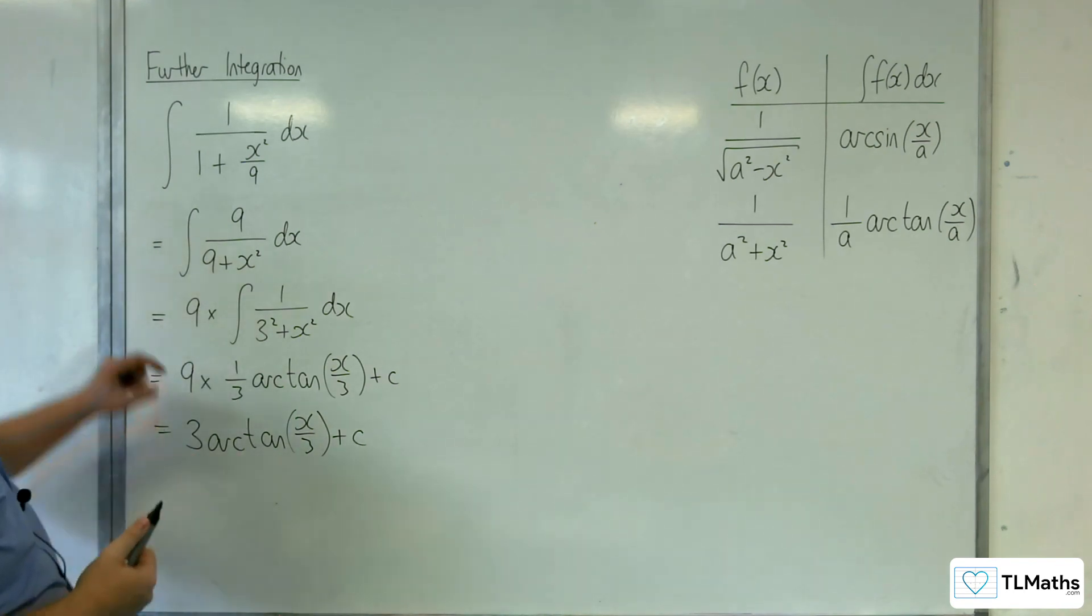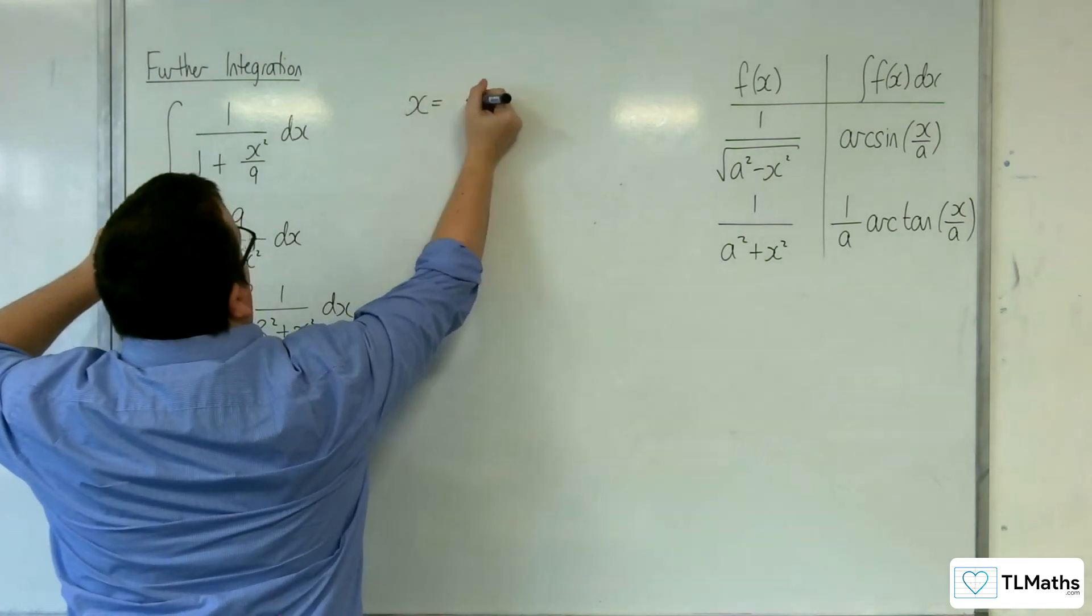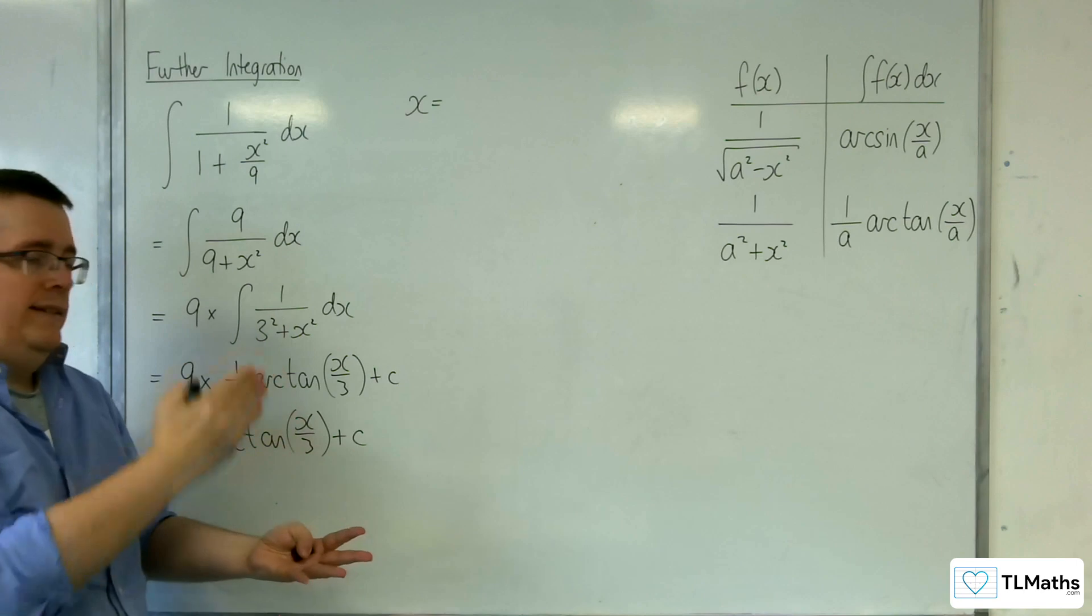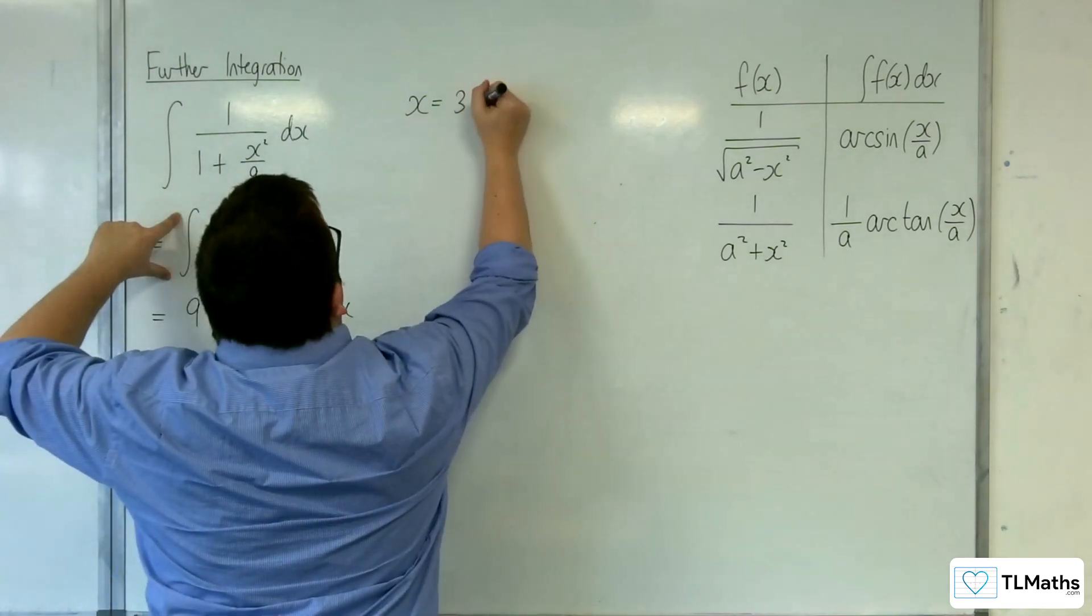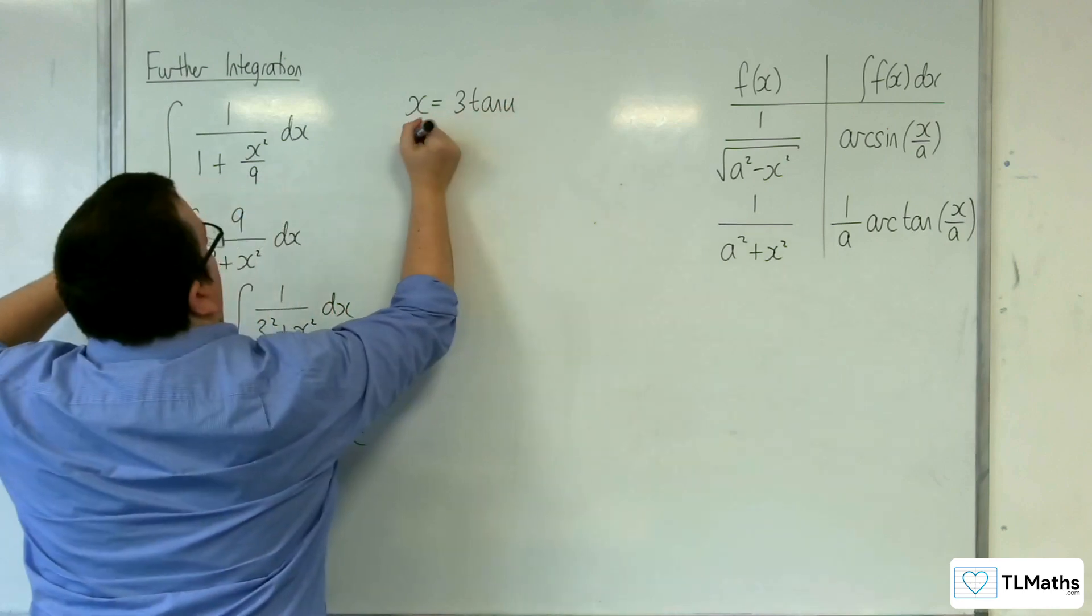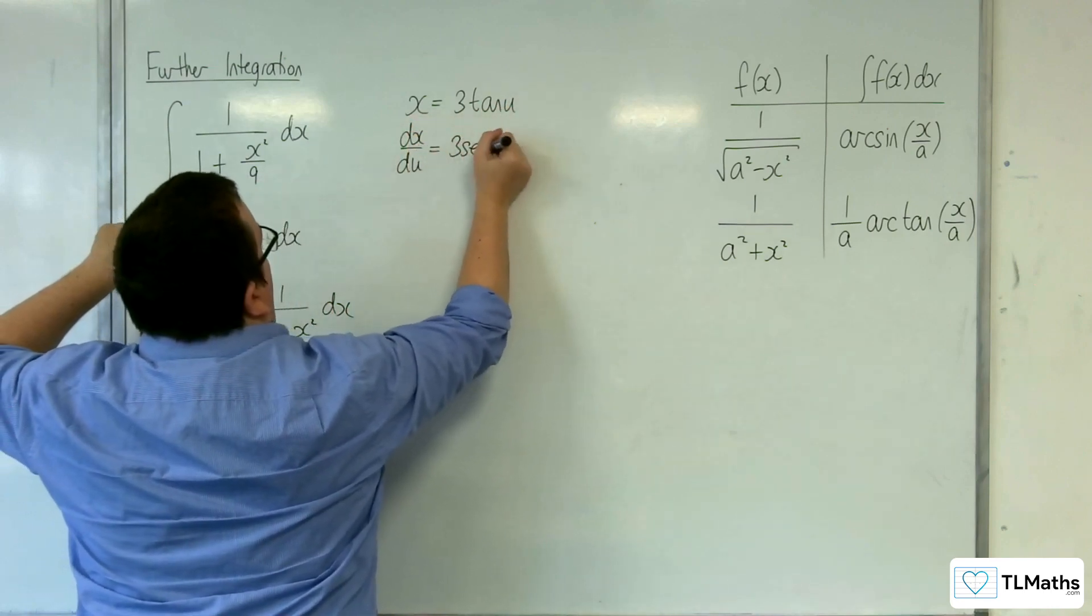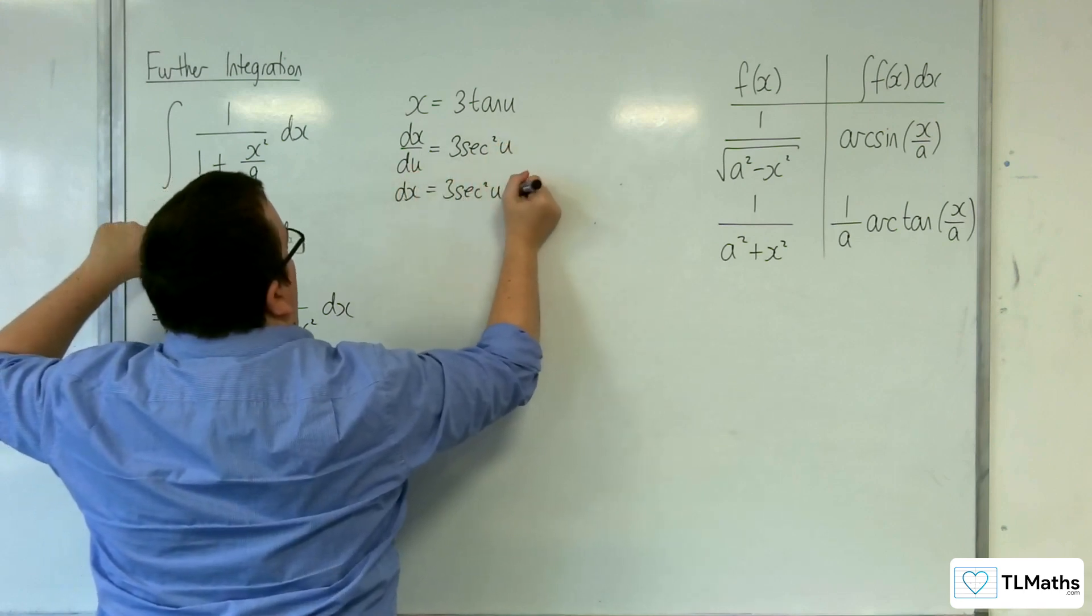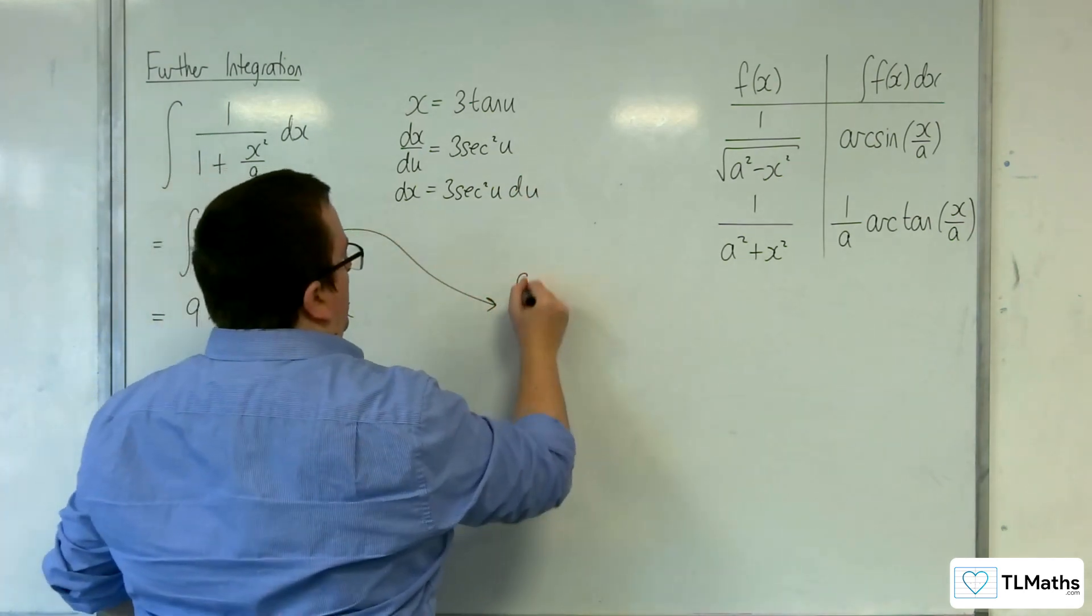Now, if you want to do it more formally, from here you could do x equals... In the previous video, we used a tan u. So if we do 3 tan u, then dx by du would be 3 sec squared u, so dx is equal to 3 sec squared u du.